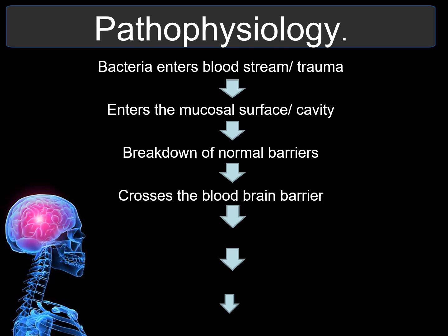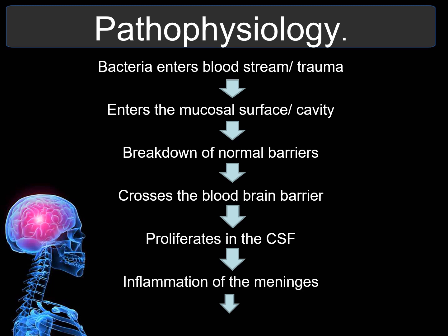The blood-brain barrier, which usually protects the brain from harmful substances, is weakened by inflammation and infection in meningitis, allowing bacteria, viruses, or other pathogens to enter the brain's CSF. Once in the cerebrospinal fluid, the bacteria or virus rapidly multiplies because the CSF is a low-immunity environment. This proliferation leads to the spread of infection in the brain and spinal cord.